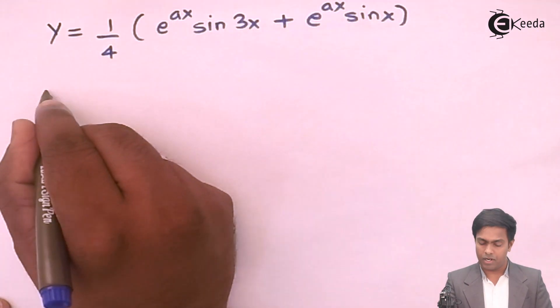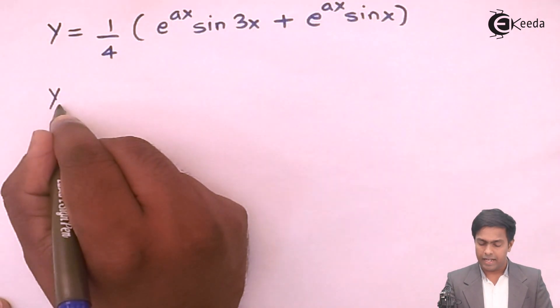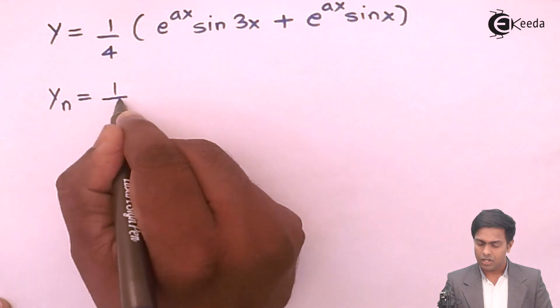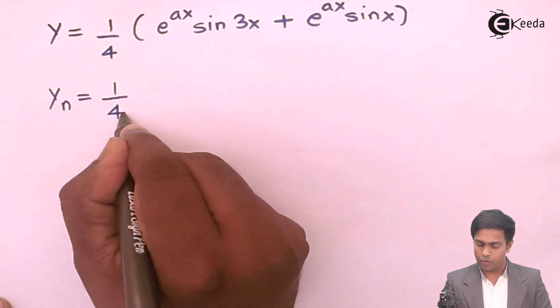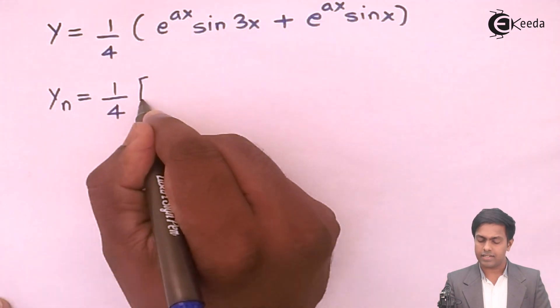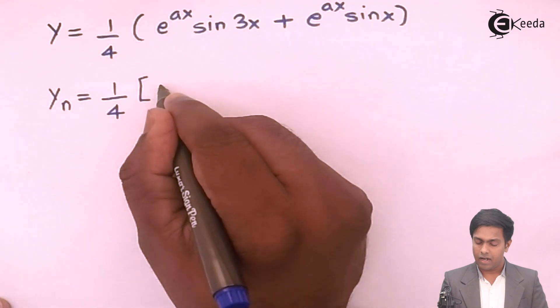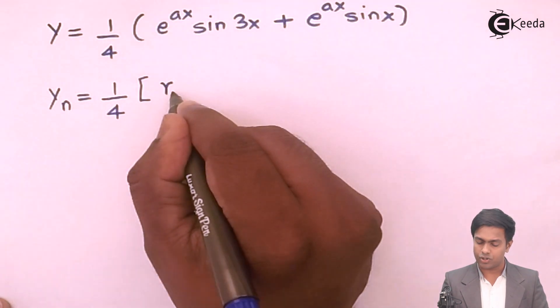Applying the formula, the nth derivative is: yn = ¼ times the sum of two terms. The first term contributes r1^n.